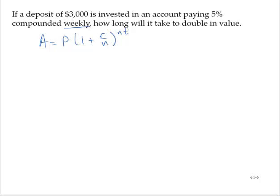Reading through the problem, a deposit of $3,000, that's my initial value, is invested in an account paying 5%, so r is 0.05. Compounded weekly, n is 52.